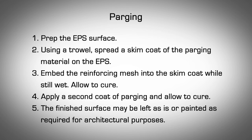Steps for applying parge coat. First, prep the EPS surface. Using a trowel, spread a skim coat of the parging material on the EPS. Embed the reinforcing mesh into the skim coat while still wet and allow to cure. Apply a second coat of parging and allow to cure. The finished surface may be left as is or painted as required for architectural purposes.